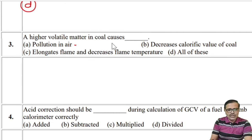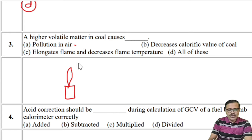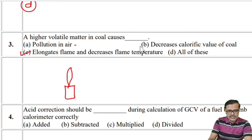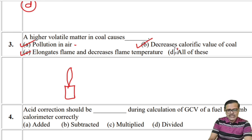A higher volatile matter in coal causes: elongation of flame length, pollution in air because volatile matter passes into the atmosphere without combustion, and it decreases calorific value because the volatile matter escapes into the atmosphere without combustion — we lose that calorific value and pollution occurs. It means all three options are correct, so the answer is the last option: all of these.